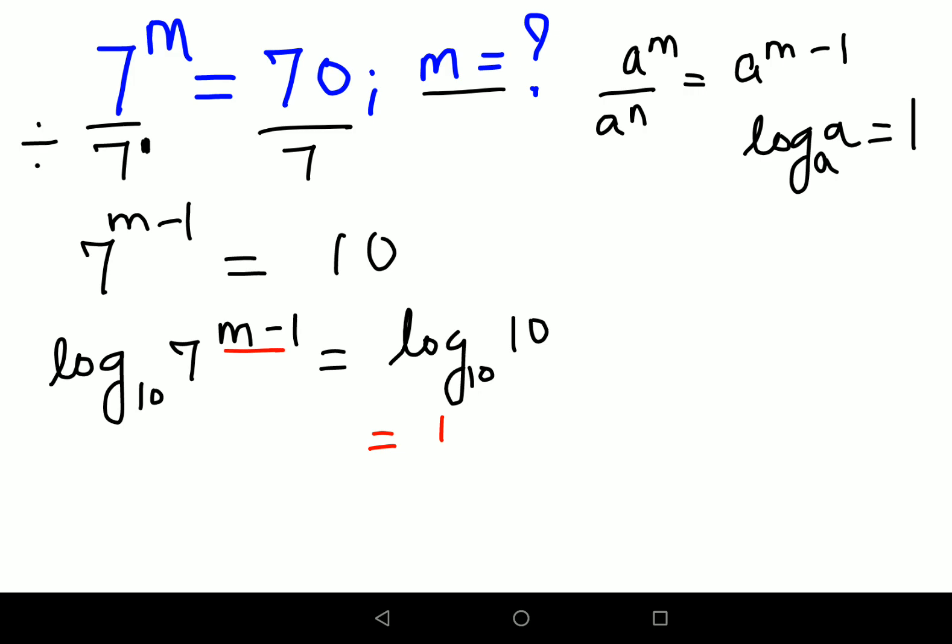And this index, obviously there is a log, so it will come ahead. So I will get m minus 1 times log of 7 to the base 10.